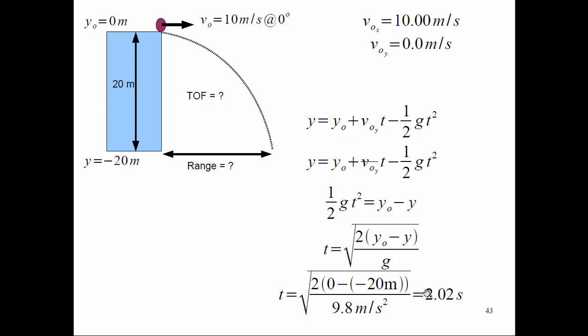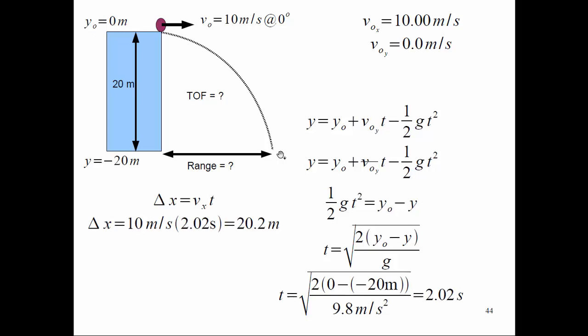How far from the cliff does it land? It was in the air for 2.02 seconds and the X velocity is constant at 10 meters per second. Using X equals X-naught plus velocity-x times time: 10 times 2.02 gives 20.2 meters. It lands 20.2 meters from the cliff.